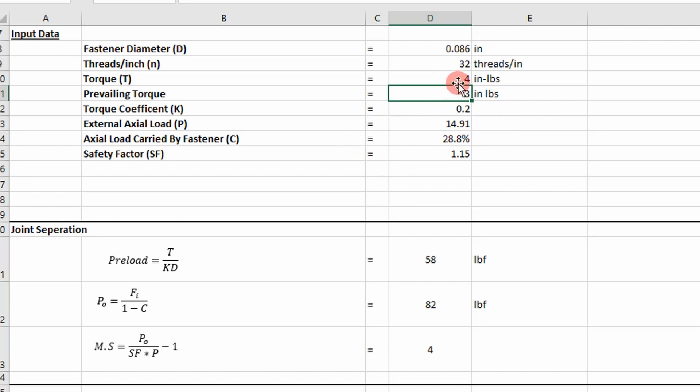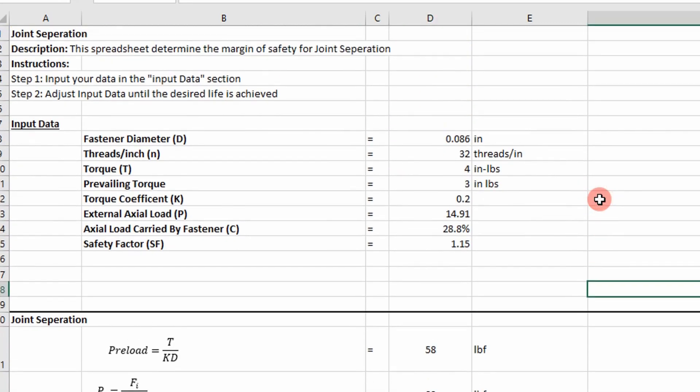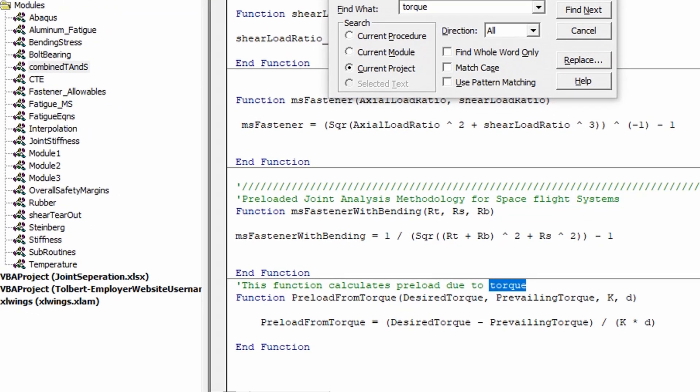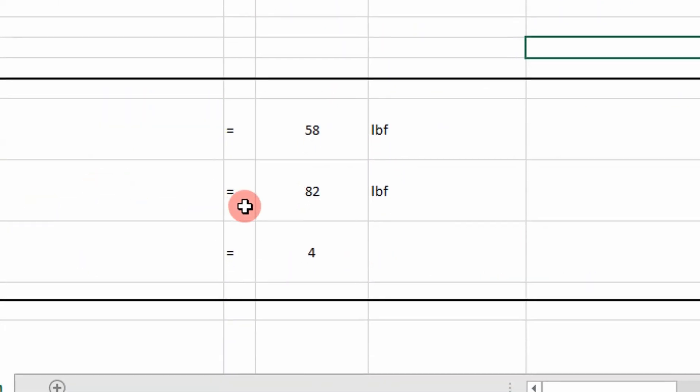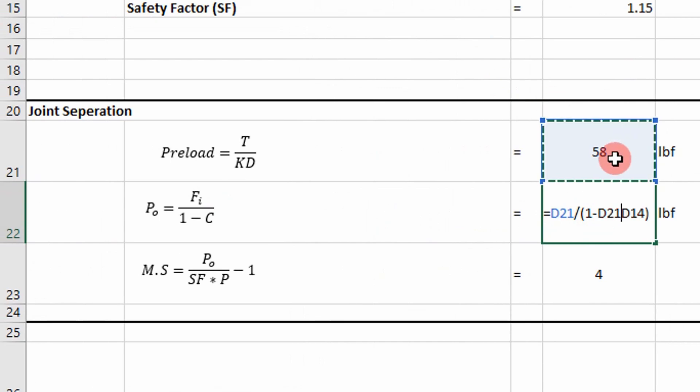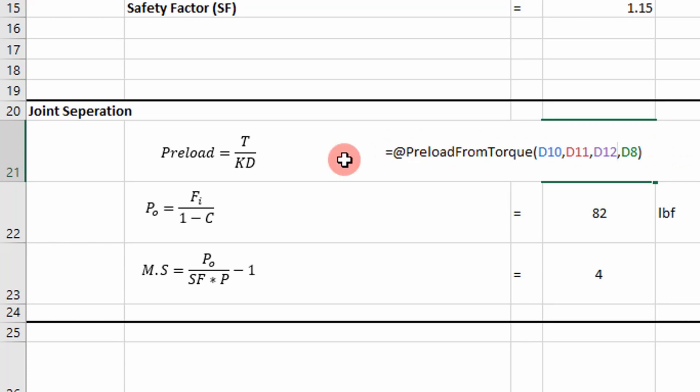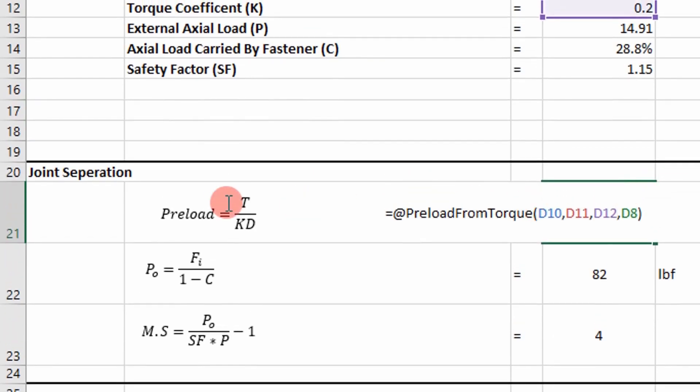So that's one of the inputs we can change. If I go to the VBA code real quick, one thing I want to show down here is the preload from torque. It's essentially going to be the torque applied to the fastener minus the prevailing torque divided by the torque coefficient times the diameter of the fastener. So that's this VBA function right here. Just wanted to show you guys that because it wasn't indicated over here in the written equation.